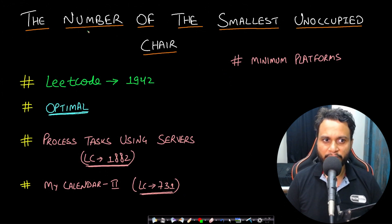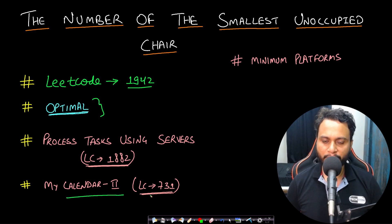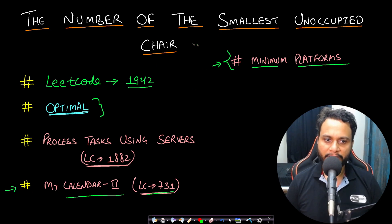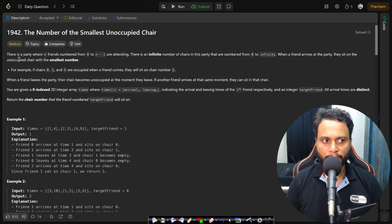Hello guys, welcome back to TechDose. In this video we will solve the 'Smallest Unoccupied Chair' problem from LeetCode number 1942. The optimal solution will be inspired by the My Calendar 2 problem (LeetCode 731) and the Minimum Platforms problem, both already uploaded on this channel. A follow-up practice problem is LeetCode 1882: Process Tasks Using Servers.